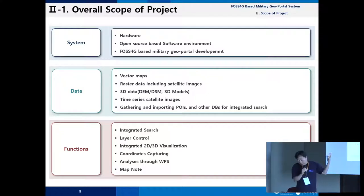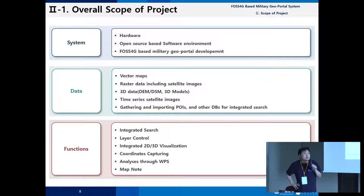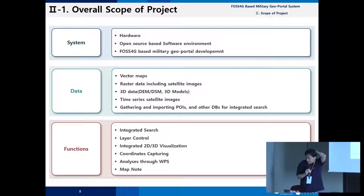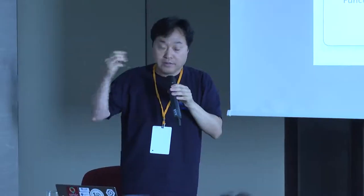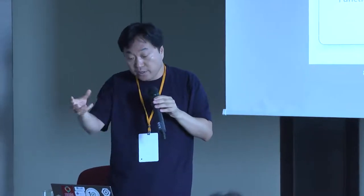The project scope included preparing hardware, installing open source software such as GeoWebCache, PostGIS, PostgreSQL, GeoServer, and OpenGXT. We also needed to import data for service: vector maps, raster maps, and 3D data including DEM, DSM, 3D models for targeting, and time series satellite data. Korea has many observation satellites to monitor North Korea, so we can get satellite images almost every day. We also needed to retrieve satellite imagery and POIs easily.